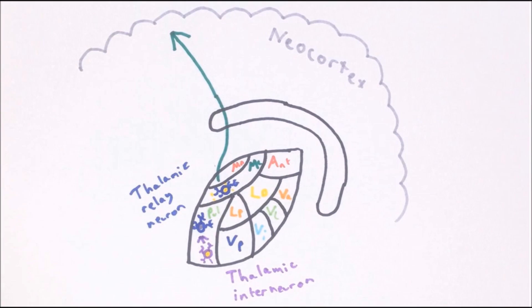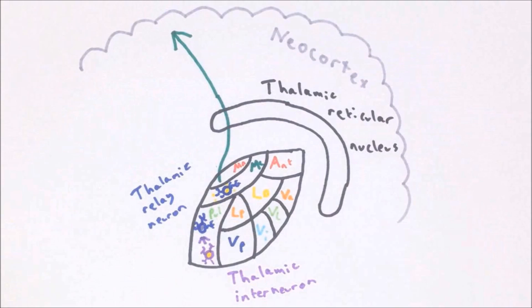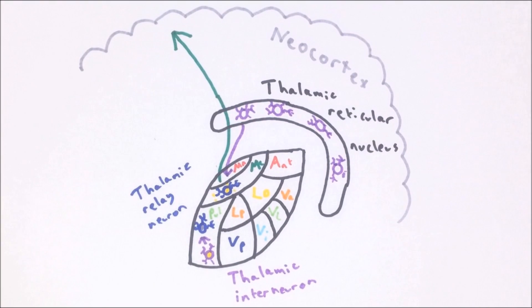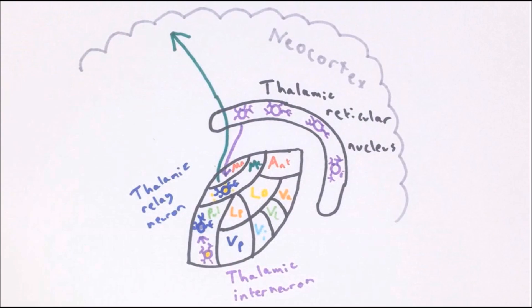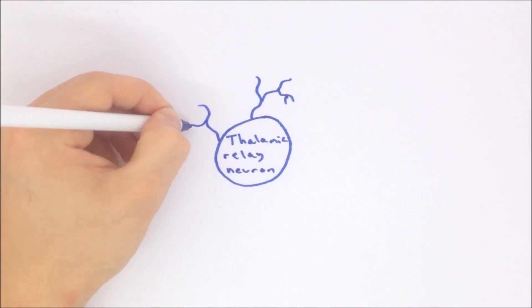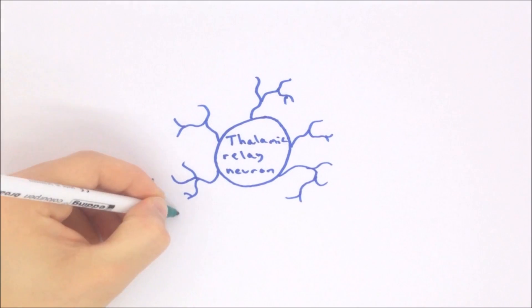25% of the cells in the thalamus are local inhibitory interneurons which act to inhibit the relay neurons. One thalamic nucleus which stands apart from the others is the thalamic reticular nucleus — a thin sheet of inhibitory interneurons which surrounds the other thalamic nuclei. Neurons in the thalamic reticular nucleus do not project to the cortex but instead send inhibitory connections to the other thalamic nuclei.